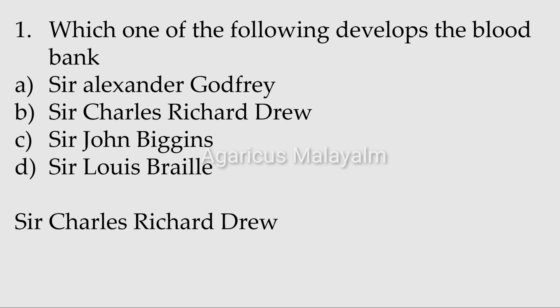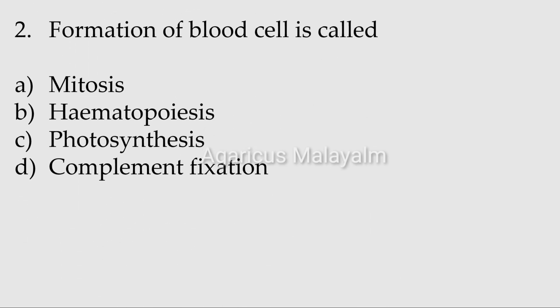Second question: Formation of blood cell is called? Answer options: Option A: Mitosis. Option B: Hematopoiesis. Option C: Photosynthesis. Option D: Complement fixation.